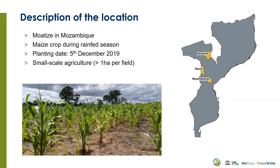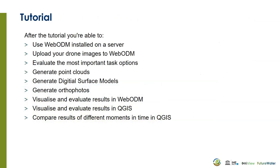So in the tutorial we are applying this to an area in Mozambique, Moatiz, for a maize crop field during the rainy season. It was planted on the 5th of December 2019, and it's small scale agriculture for which drone images are very useful. After this tutorial you are able to use WebODM installed on a server, upload your drone images to WebODM, evaluate the most important task options, generate point clouds, generate digital surface models, generate orthophotos, visualize and evaluate results in WebODM, visualize and evaluate results in QGIS, and compare results of different moments in time in QGIS.